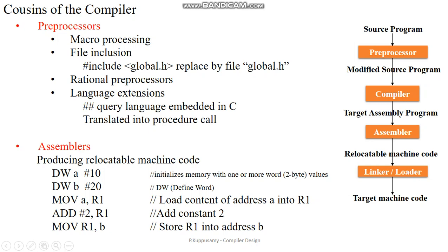Then the constant 2 is added to the content of register 1. Finally, the content of register 1 is moved into B, which is stored at address 20. So the assembler processes this assembly language and creates the relocatable machine code.